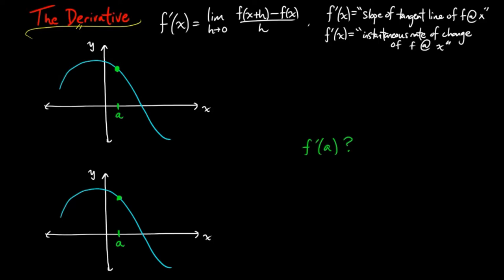First, let's let h approach 0 from the left, meaning we are taking h to be negative. And if h is negative, a+h is to the left of a. And as h approaches 0, we get a sequence of secant lines going through the green point, (a, f(a)).